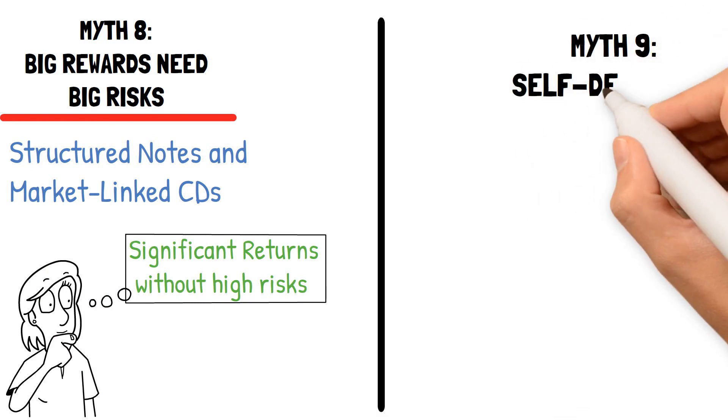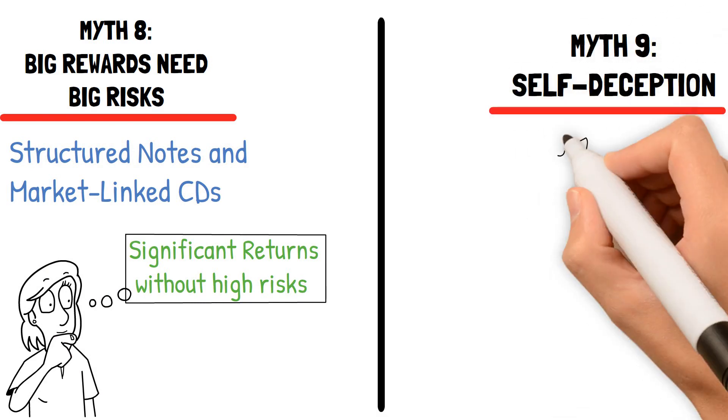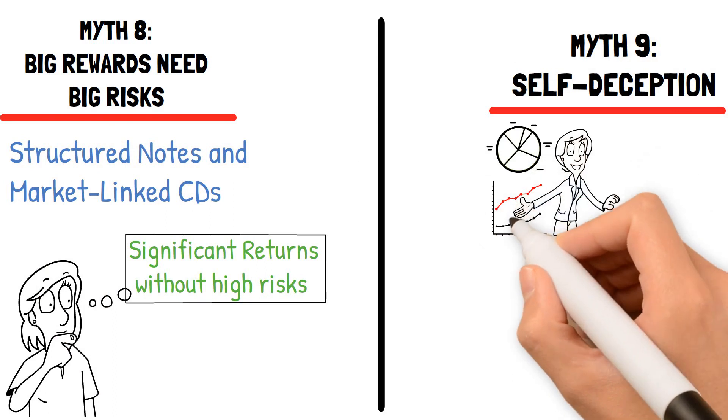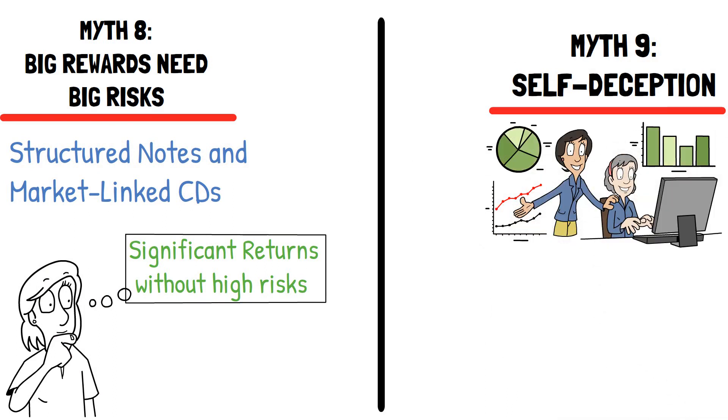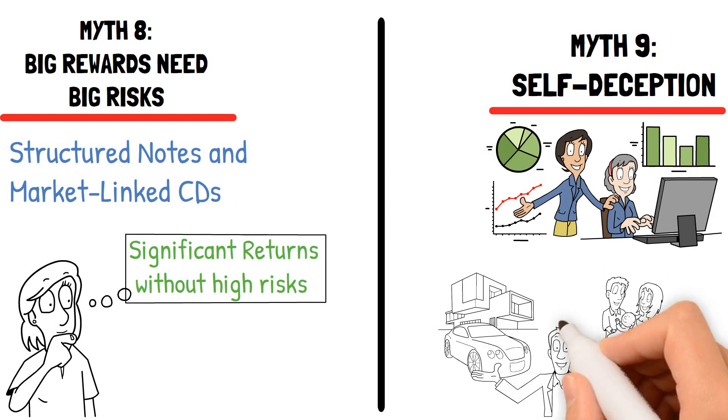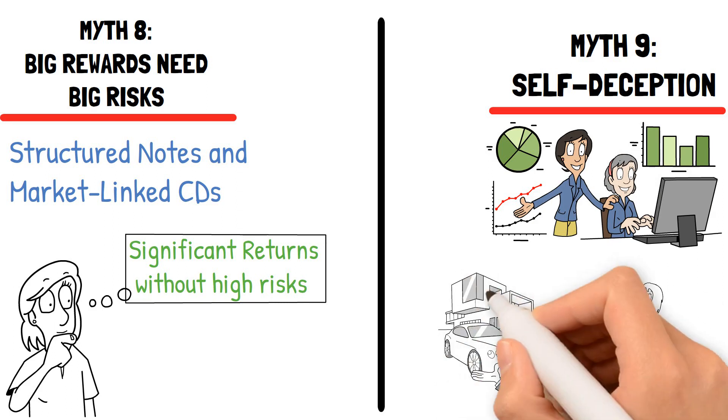Myth 9: Self-deception. To attain financial success, it's crucial to face reality and not be deluded by myths. Taking control and making informed decisions is vital for our and our family's well-being.